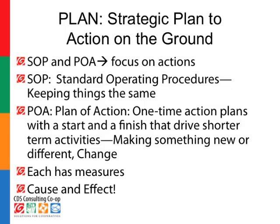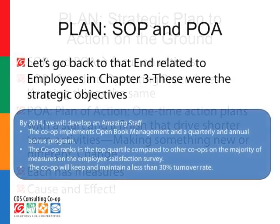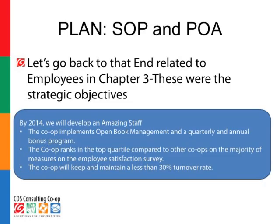Each of these has measures for how we're doing, and each is about cause and effect — the underlying principle in all of our strategy. We do something and something happens. Let's go back to that end related to employees from Chapter 3. These were the strategic objectives: by 2014, we'll develop an amazing staff. The co-op implements open management and a quarterly and annual bonus program. The co-op ranks in the top quartile compared to other co-ops in the majority of measures in the Employee Satisfaction Survey. And the co-op will maintain less than 30% turnover rate.